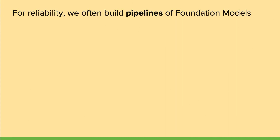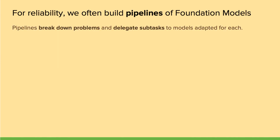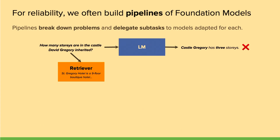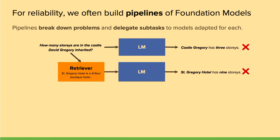To build robust systems using foundation models, we often want to use pipelines, where different foundation models interact with each other. Pipelines help us break down complex problems into manageable sub-problems, delegating each subtask to models adapted for that particular subtask. For example, the question 'how many stories are in the castle David Gregory inherited?' — feeding this directly into a language model gives the incorrect answer of three stories, and even a single retrieval lookup fails because the question can't be answered that simply.